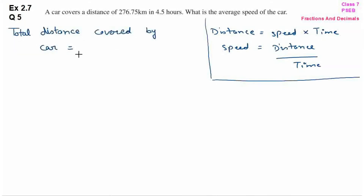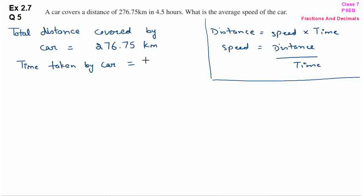Total distance covered by car is equal to 276.75 km, which is given in the question. Time taken by car is equal to 4.5 hours. This is also given in the question — the car covered 276.75 km in 4.5 hours. Now we have both distance and time, so we will find the average speed of the car.